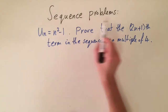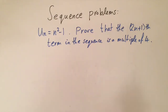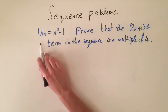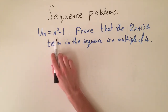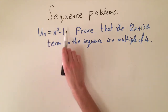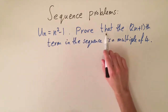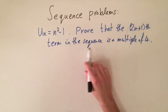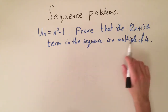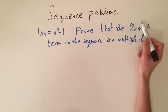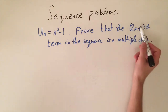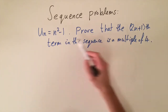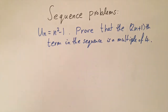Today we're going to be looking at some sequence problems that are a bit harder than usual. We have the formula u(n) = n² - 1, and the problem is to prove that the (2n+1)th term in the sequence is a multiple of four. This number 2n+1 represents an odd number, so we need to prove that all the odd-indexed terms starting at three are multiples of four.